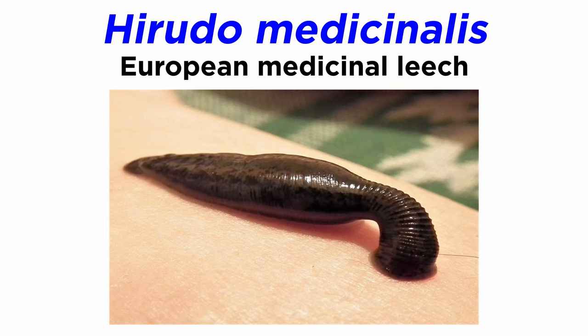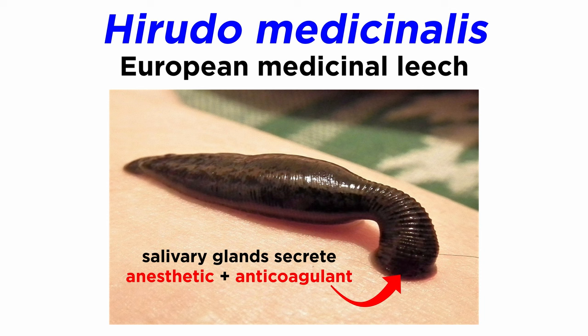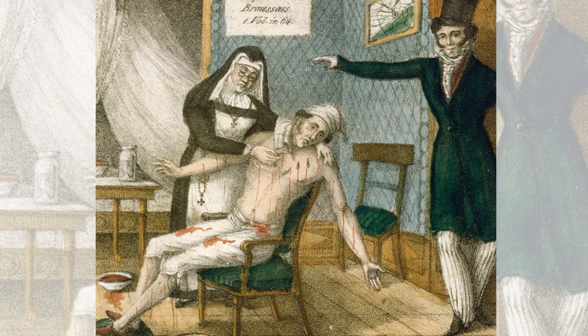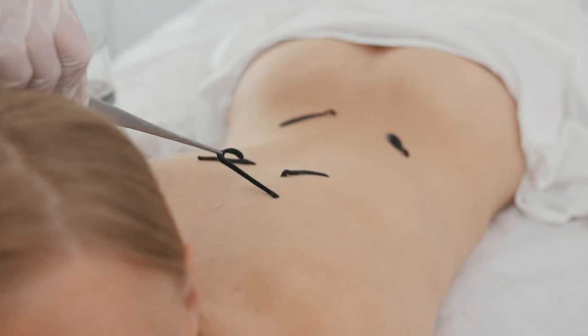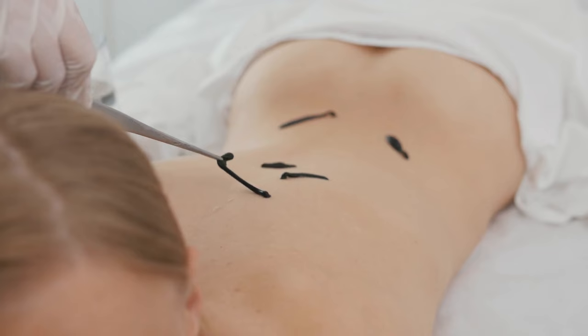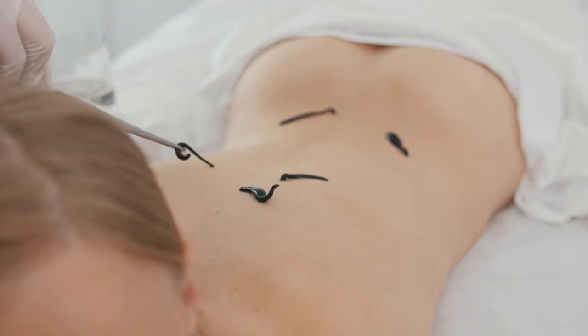Perhaps the most well-known species of leech is Hirudo medicinalis, the European medicinal leech, which is actually one of several species of so-called medicinal leeches. These leeches, and all true blood-sucking leeches, have salivary glands that secrete an anesthetic, as well as an anticoagulant, and at least 60 other proteins. Though historically they were used primarily in bloodletting or leech therapy, they are still used in modern medical practices, mostly to stimulate circulation to skin grafts, reattached fingers, and reconstructive surgery of the ear, nose, lip, and eyelid.